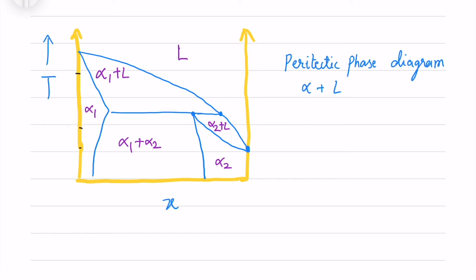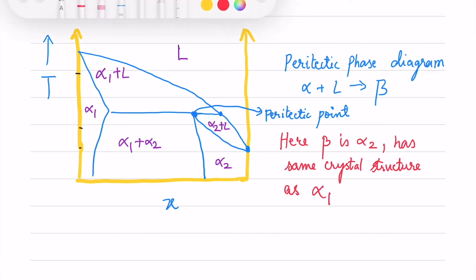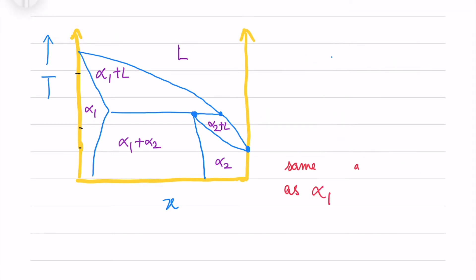So what is a peritectic phase diagram? Mainly, you see a peritectic point where alpha plus liquid goes to beta. And here beta is alpha 2, which has the same crystal structure as alpha 1. So alpha 1 and alpha 2 we draw on the same G curve. Let's see how alpha 1 and alpha 2 will look like.